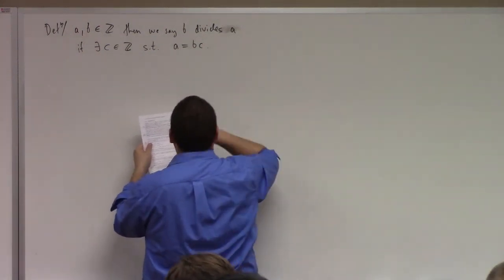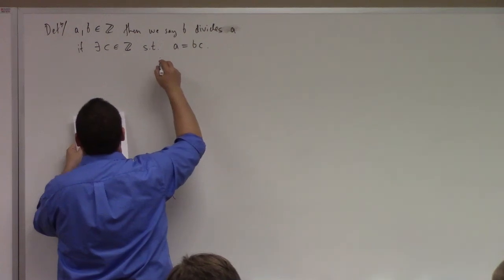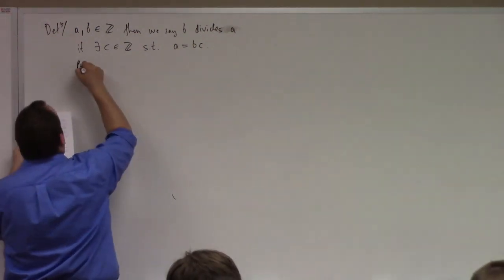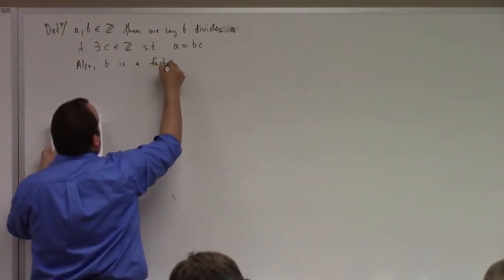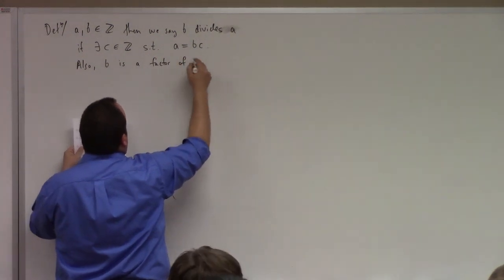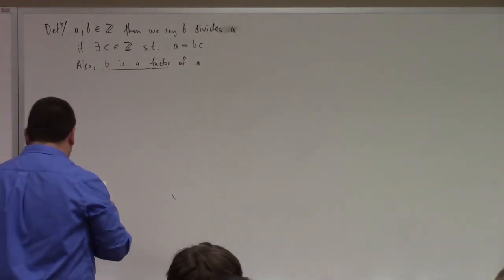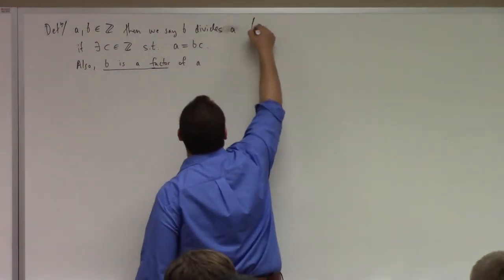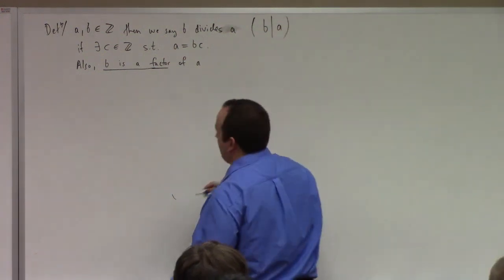In this case, we say that b is a factor of a. Our shorthand for 'b divides a' — what do we write? b, vertical line, a — like that. b divides a.